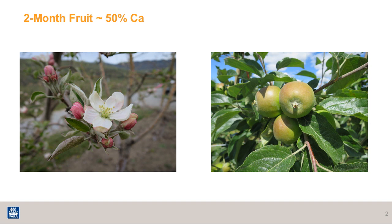We know that roughly about 50% of the calcium is in the fruit by the time it reaches the 50g stage. However, it is important to note that there are some slight differences to how calcium moves into the fruit at this early part of the season compared to the later part of the season.